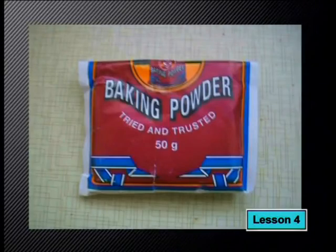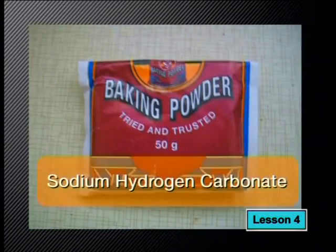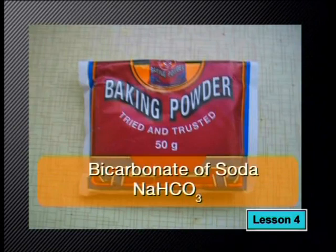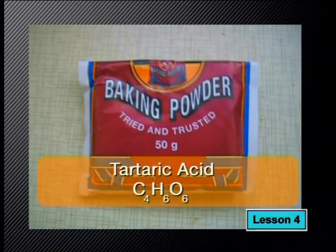In today's lesson, we're going to show you that baking isn't only like chemistry, but that there's some very important actual chemistry happening every time you bake something. One of the key ingredients in many cakes, breads and scones is baking powder. The main ingredient of baking powder is sodium hydrogen carbonate, also called sodium bicarbonate or bicarbonate of soda. Baking powder also contains tartaric acid.